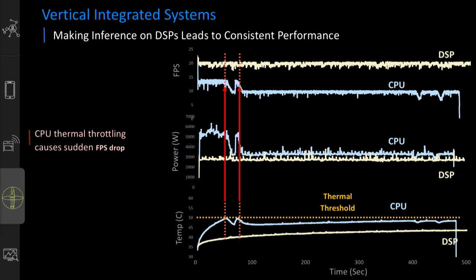But another reason to go to an accelerator isn't just performance. We took one of those models and kept running it continuously on either the CPU or the DSP to get steady-state behavior. On the x-axis is time; we're running inferences continually. Looking at FPS, at the beginning the DSP gets about 2x speedup, clocking in at around 20 FPS. Looking at power, the CPU consistently dissipates more power than the DSP — and then something interesting happens.